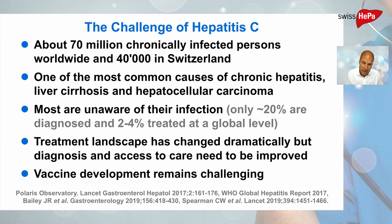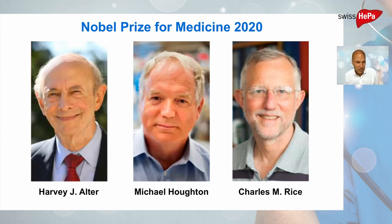Different from Hepatitis A and B, where we have very efficient vaccines, vaccine development for Hepatitis C remains challenging due to the high genetic variability of this virus. The discovery of the Hepatitis C virus was really a milestone of modern medicine, for which Harvey Alter, Michael Houghton and Charles Rice were awarded the Nobel Prize for medicine last year.